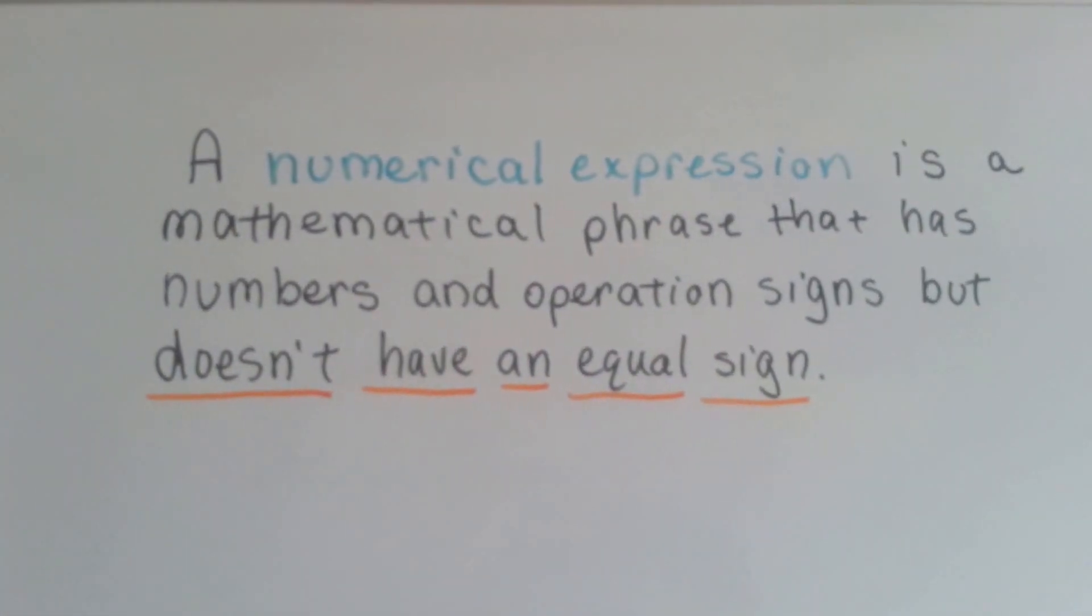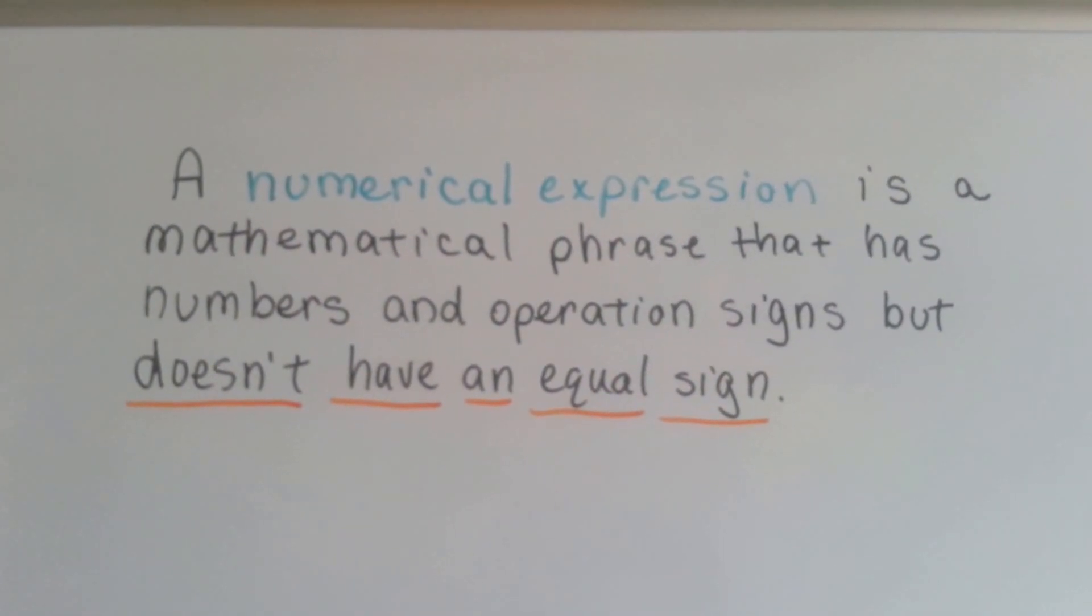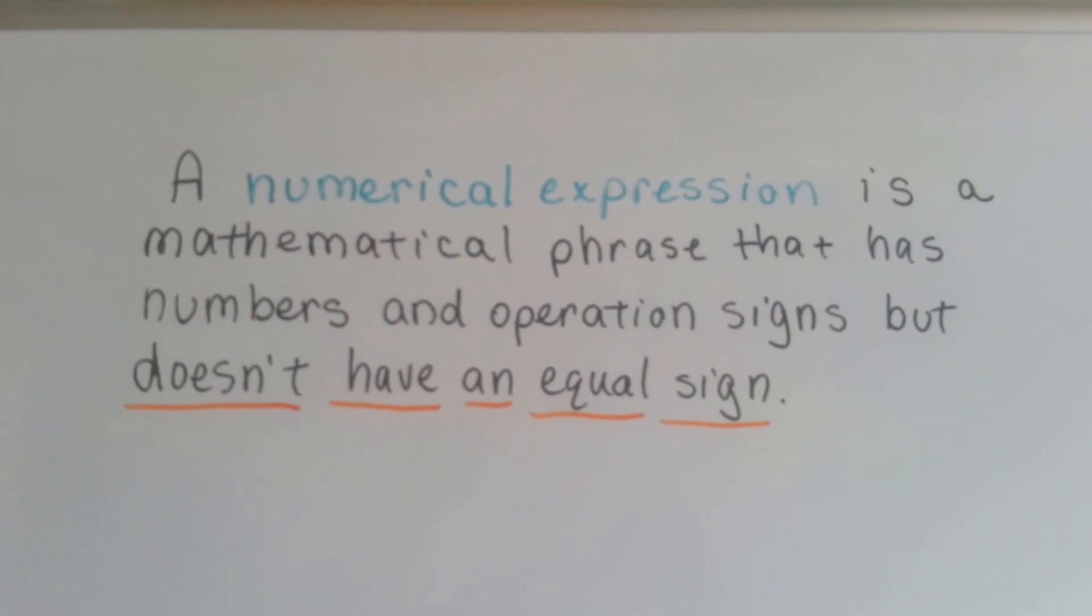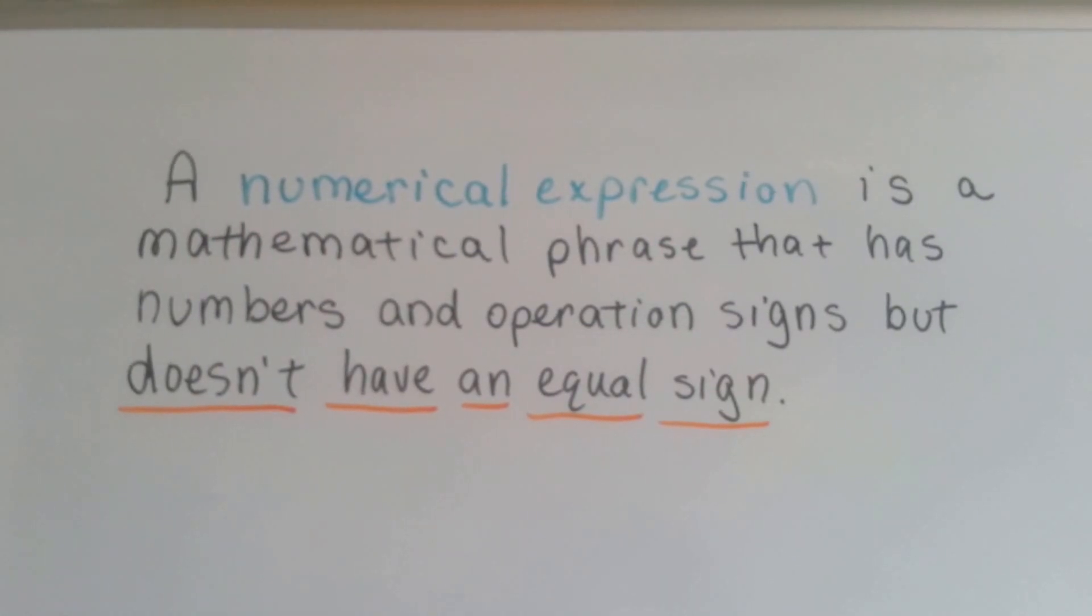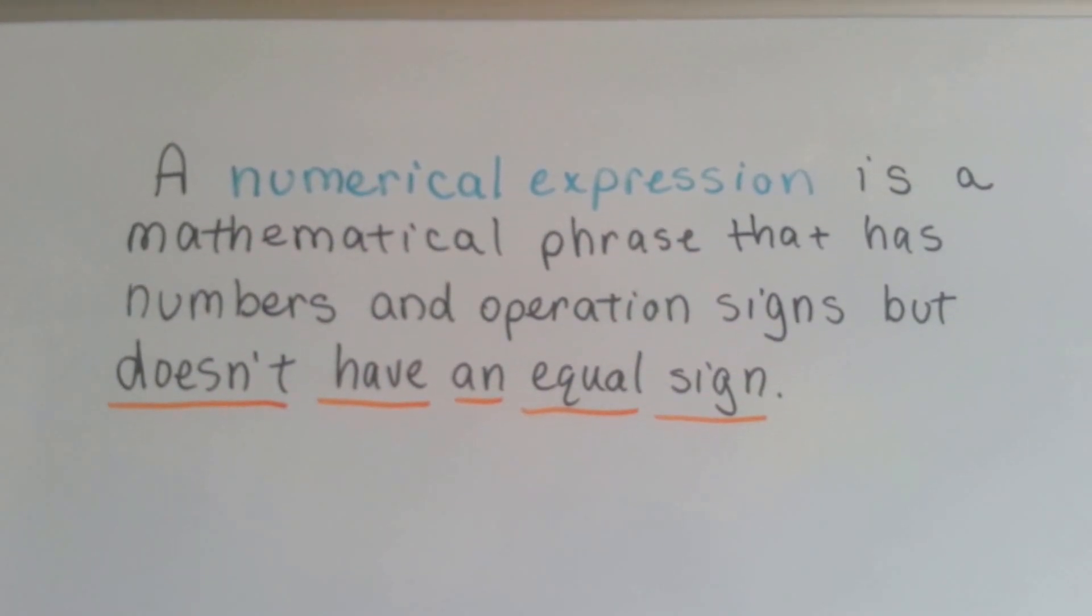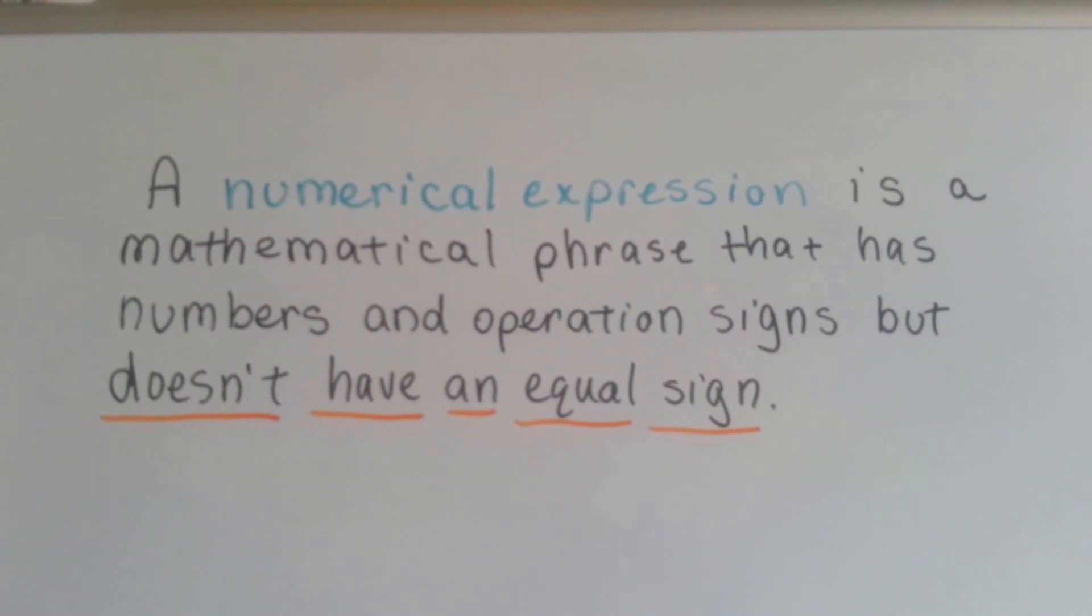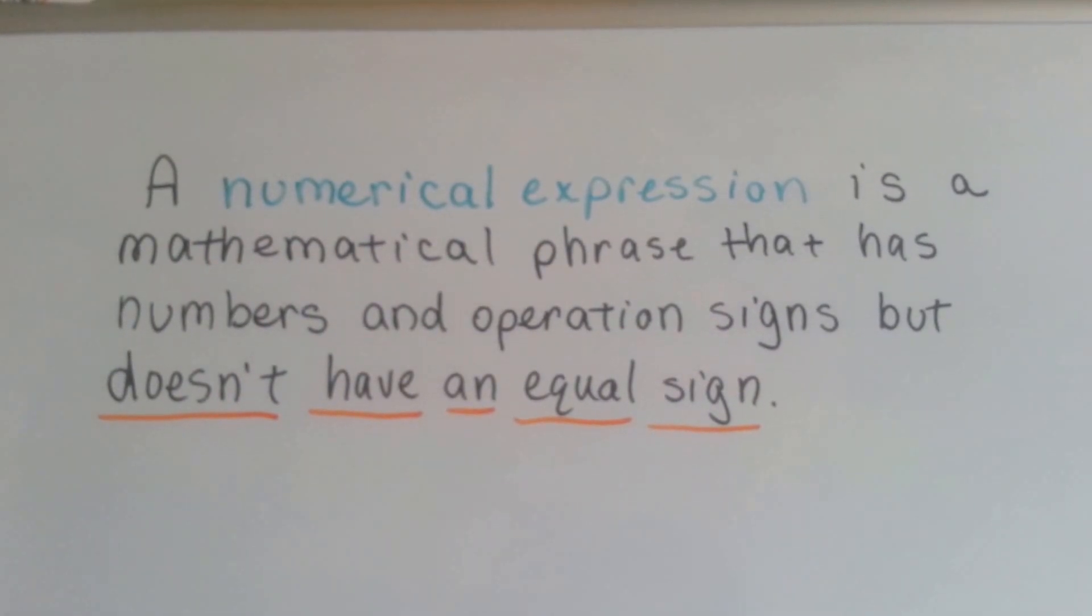A numerical expression is a mathematical phrase that has numbers and operation signs, you know, plus, minus, multiplication, division signs, but doesn't have an equal sign. Isn't that odd? An equation has an equal sign, but a numerical expression does not have an equal sign.